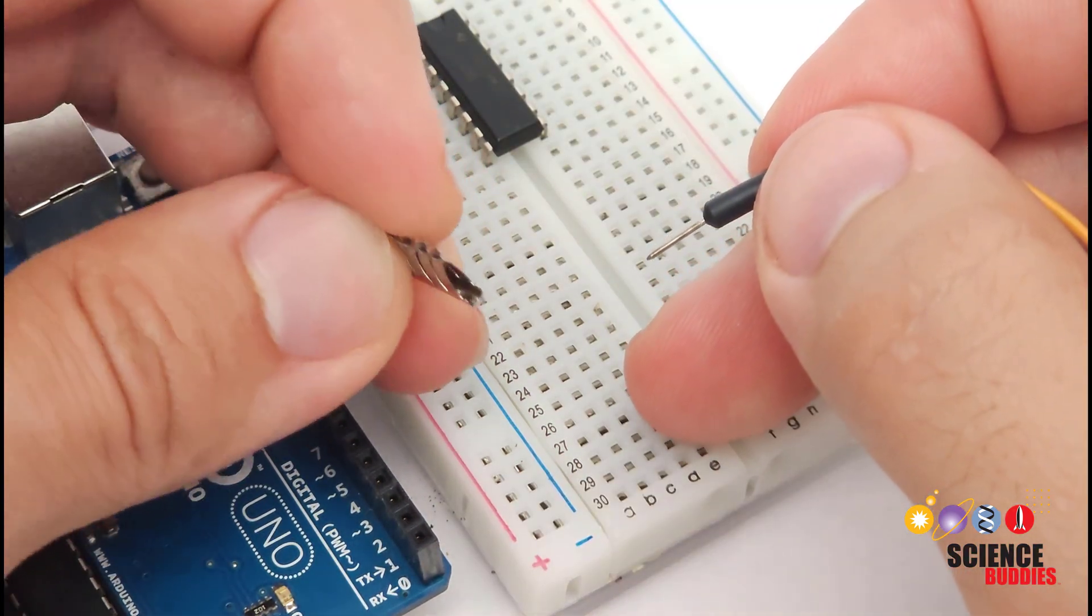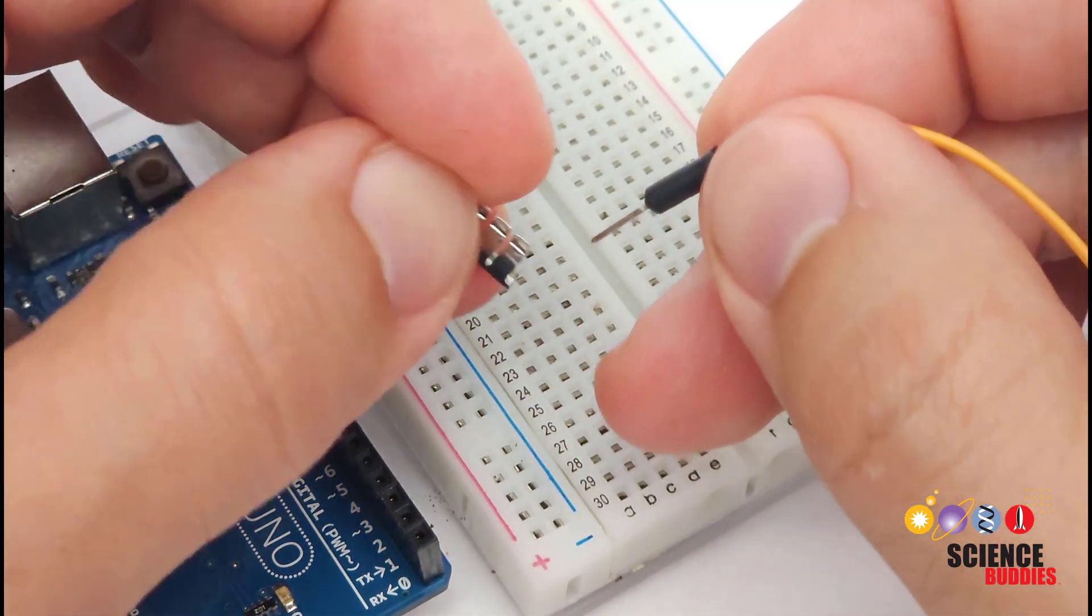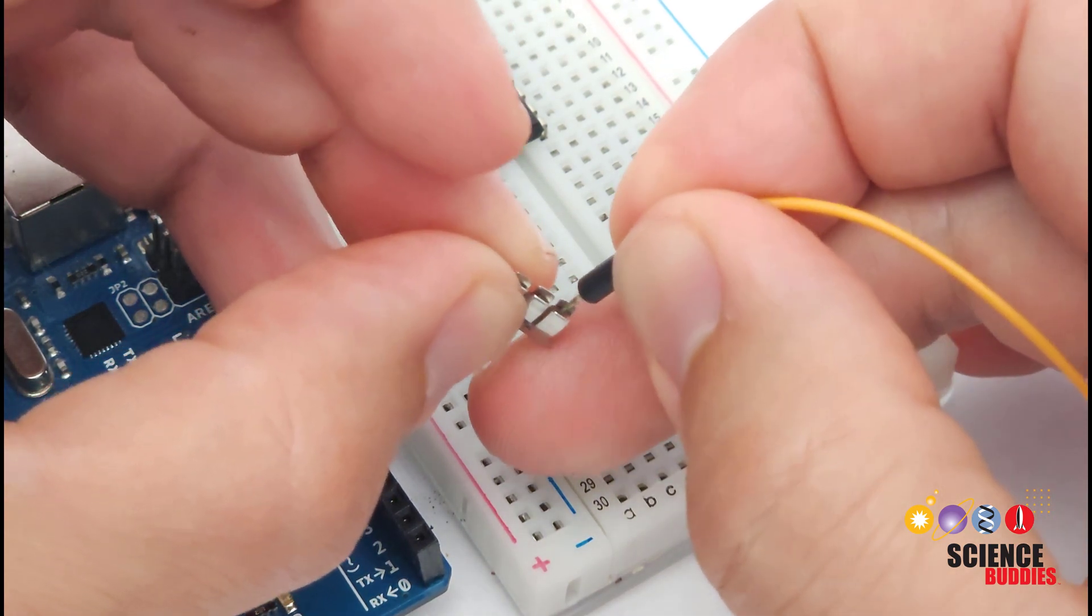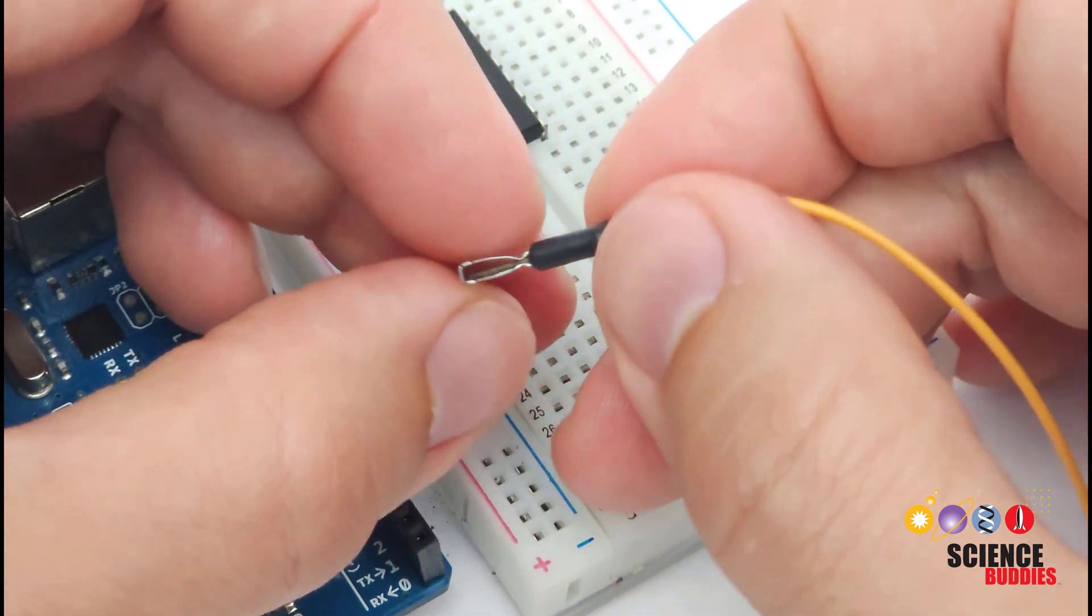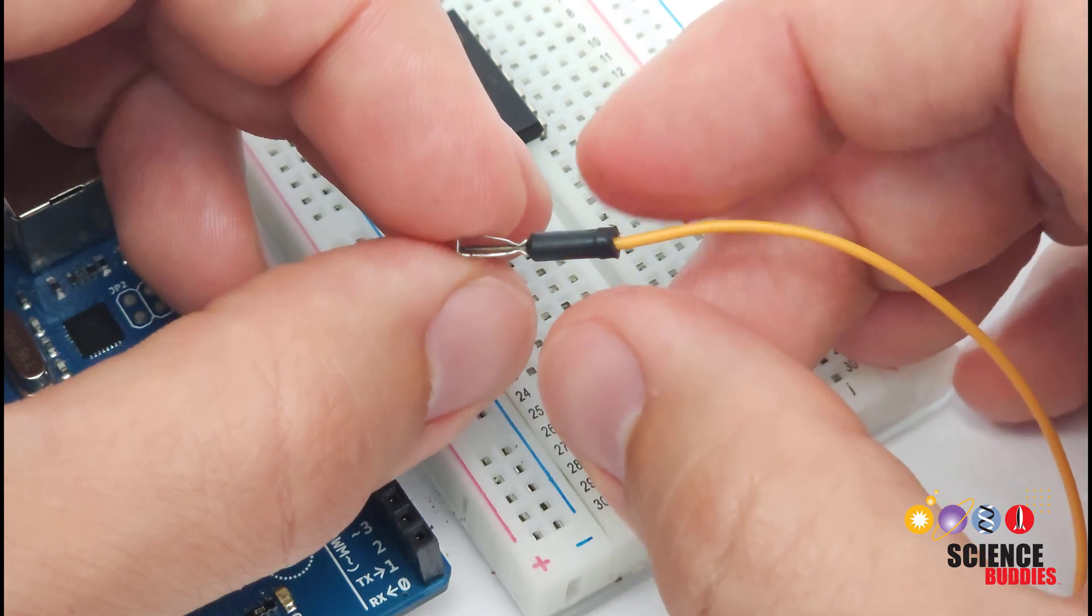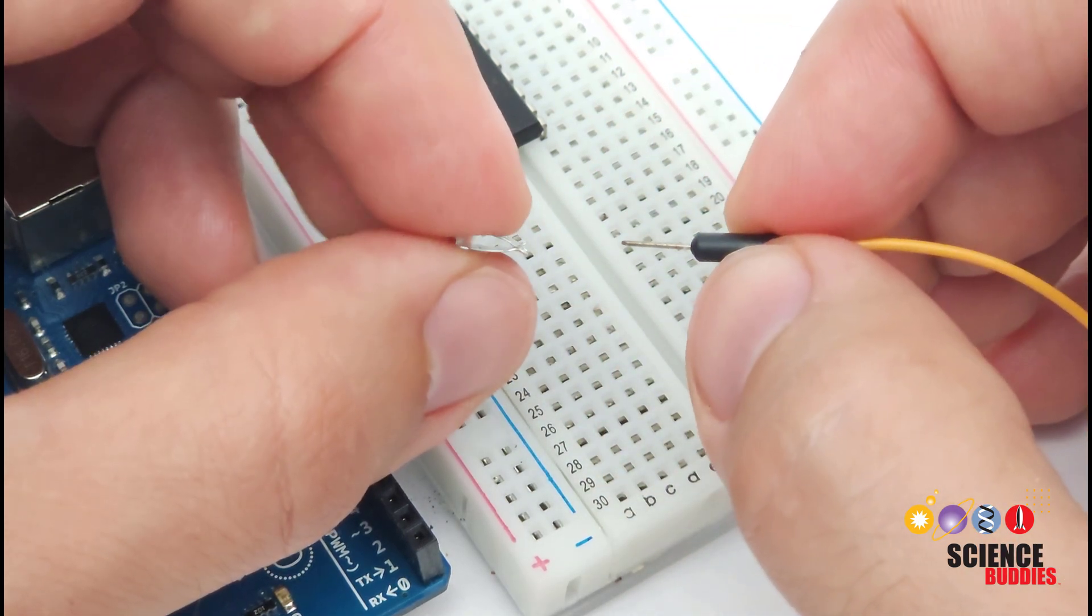This is possible because of these metal clips inside the breadboard. When you push something into one of the holes, the two sides of the clip grab onto the part, maintaining electrical contact and providing a little bit of friction to hold it in place but not gripping it so tightly that you can't just pull the part out.